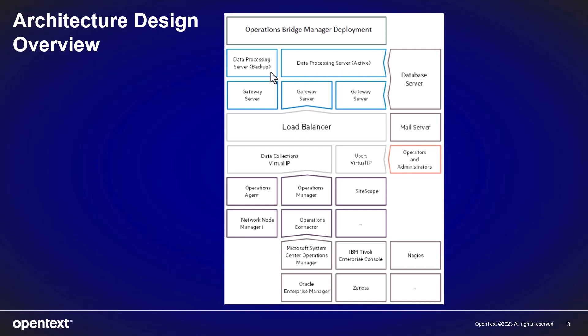If an additional DPS is installed, it acts as the backup server that can be used in case there is a failure with the active DPS. The DPS that is installed first is referred to as the primary data processing server.